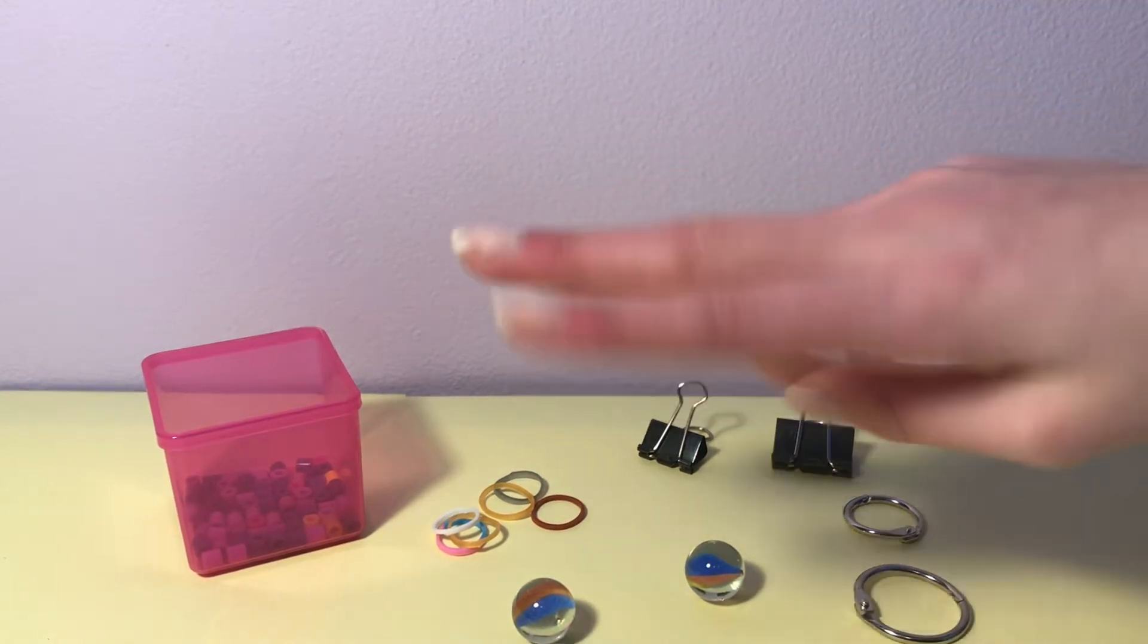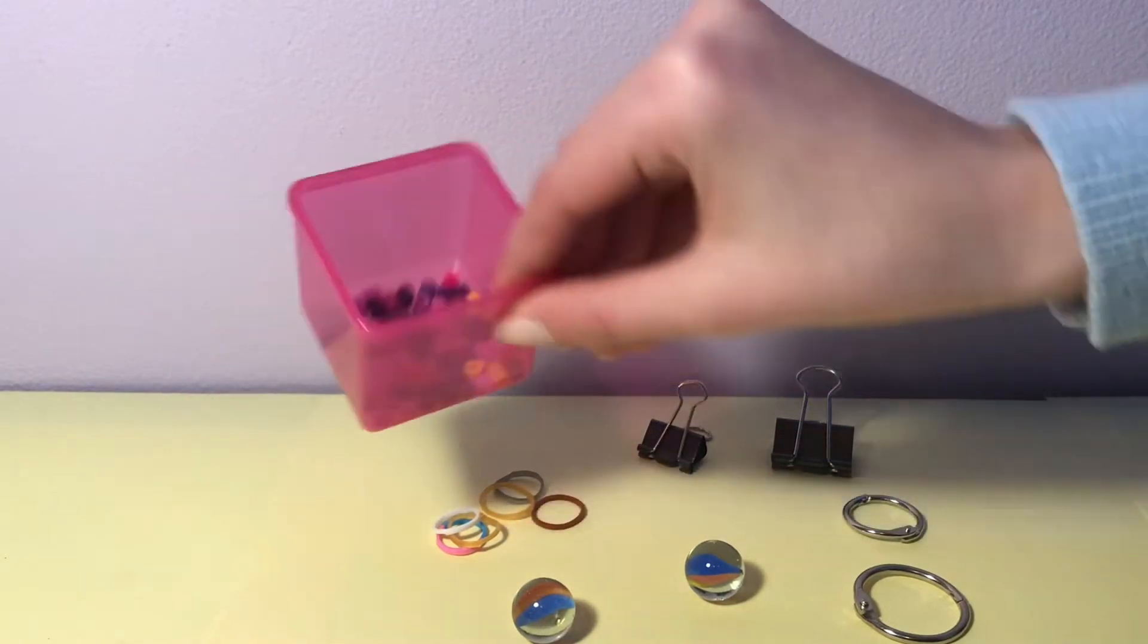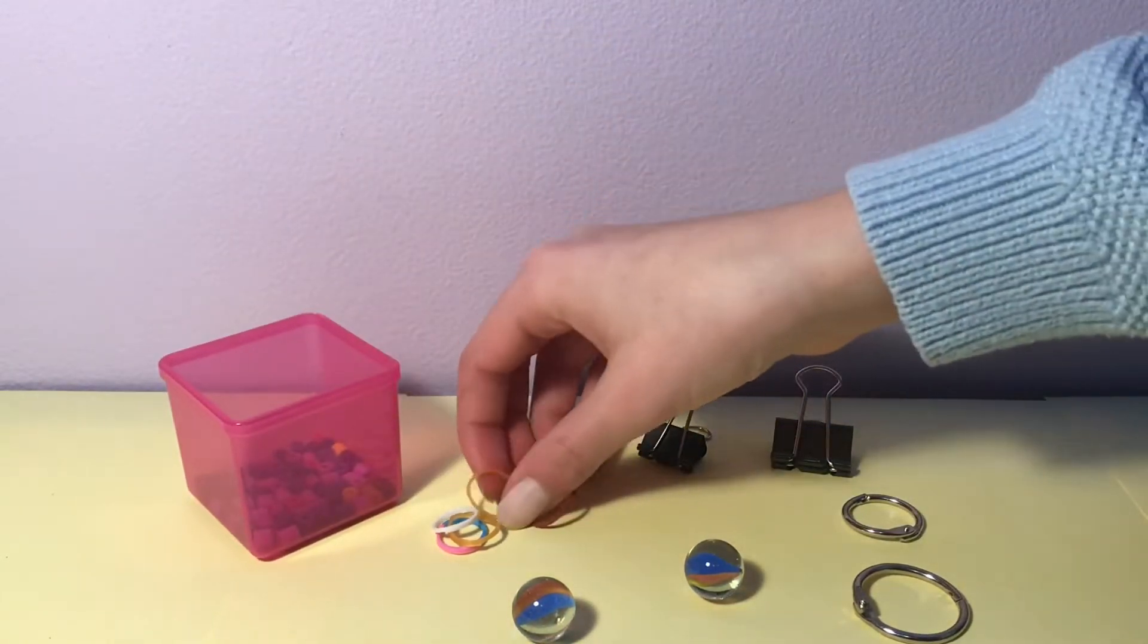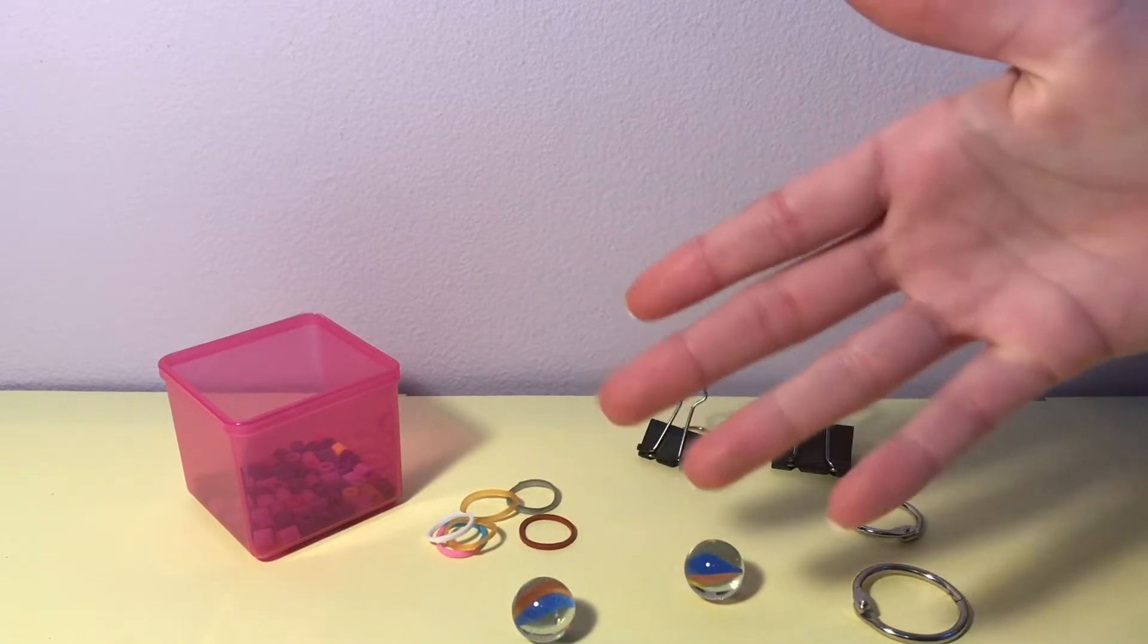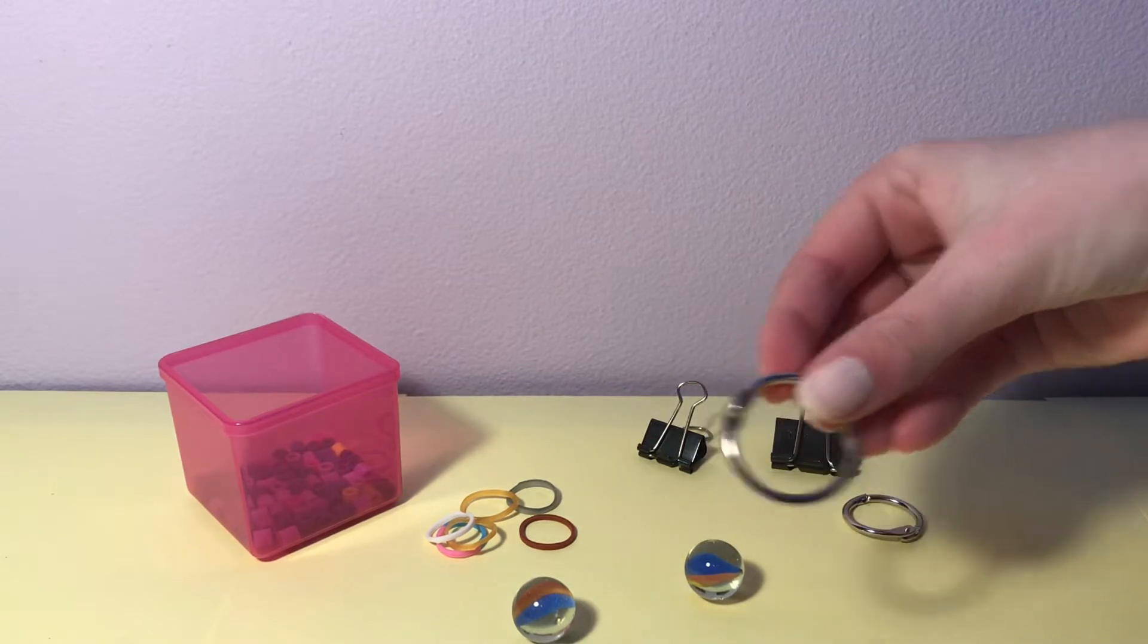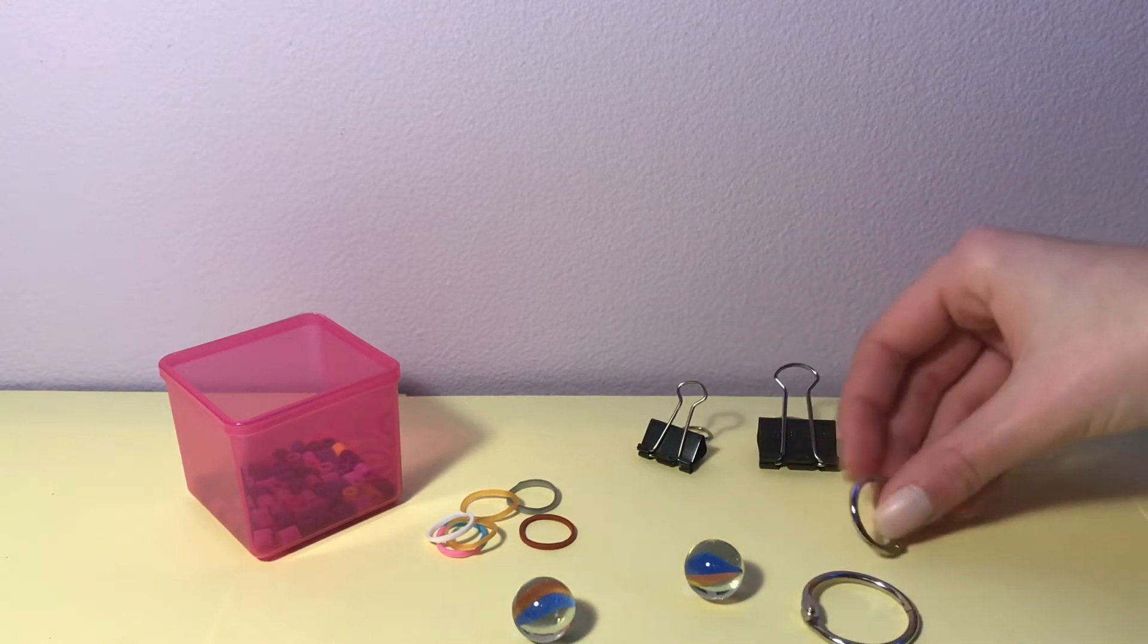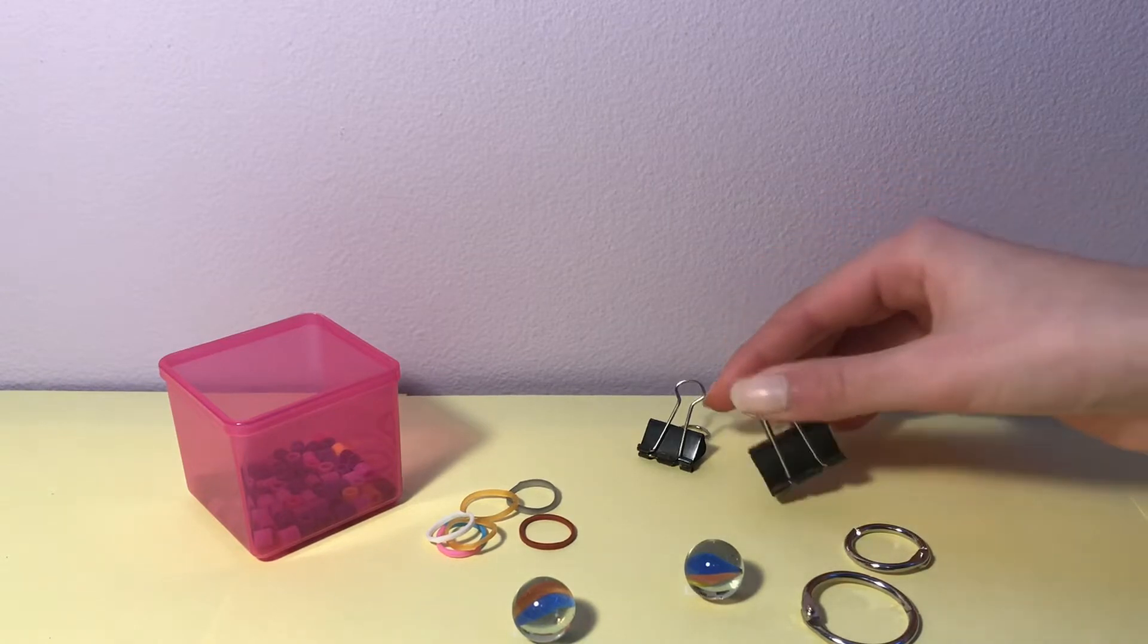The materials that you'll be needing for both of these are going to be some beads. I'm using these small multi beads, some small rubber bands, these are from Rainbow Loom, two marbles, or you can use one depending on how many you want to make, some of these unclippable rings. I have two different sizes, and then binder clips. I have two different sizes in these too.